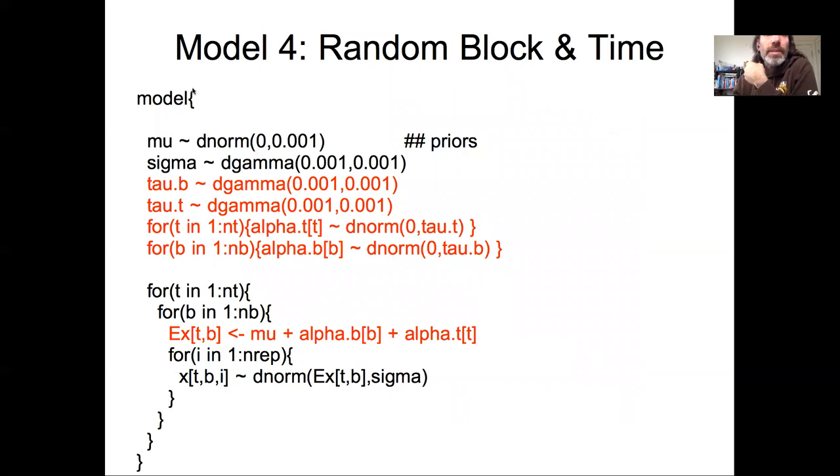In this fourth model we've now combined the random time and block effect, which really shows the strength of this random effect structure. Now I can write down the expected value is changing by both time and block according to some global mean and some alpha b block effect and an alpha t time effect. And then I have to have parameter models on both the alpha b block effect and a parameter model on the alpha t time effect. Both are mean zero with precisions tau b and tau t, and then we need to have priors on those precisions.